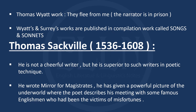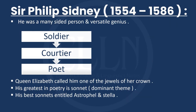Sir Philip Sidney was born in 1554. He was a many-sided person and a versatile genius. Queen Elizabeth called him one of the jewels of her crown. His greatest work in poetry is the sonnet, and his best known sonnet sequence is Astrophil and Stella, which has the dominant theme of love.